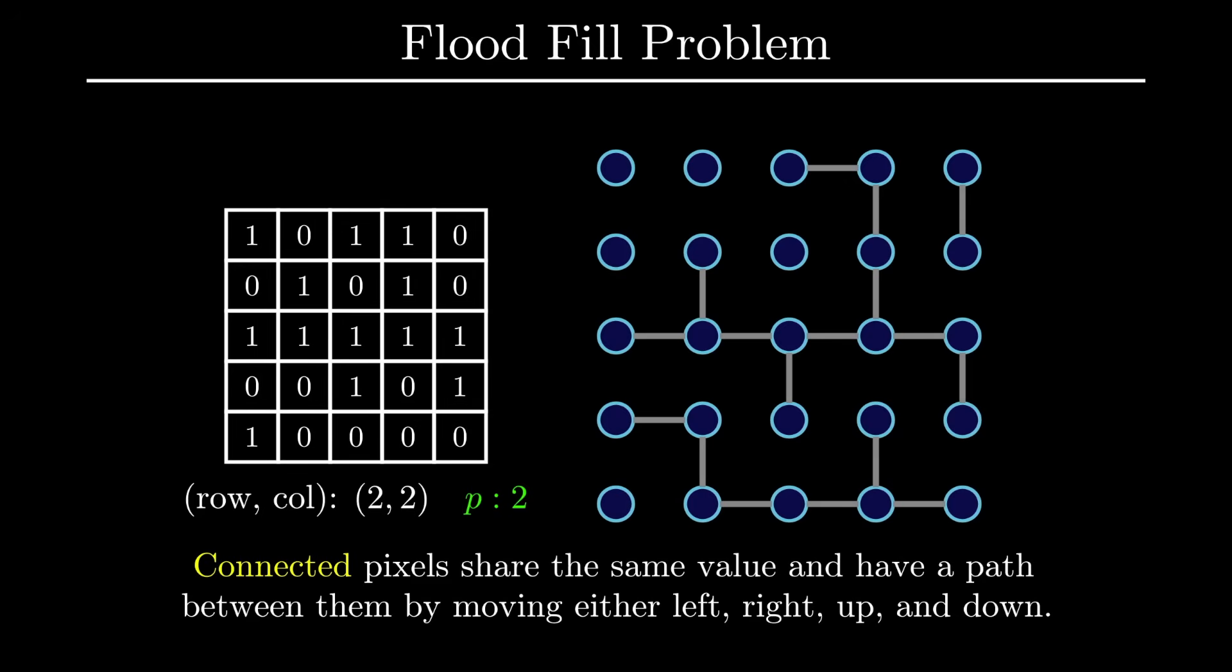And given the following input, where we once again change the center pixel to a new pixel value, we can transform the pixels one by one by performing a breadth-first search on the graph representation of the image. In fact, you could solve this with depth-first search as well. I personally find the implementation using BFS a little bit more intuitive for this particular problem.